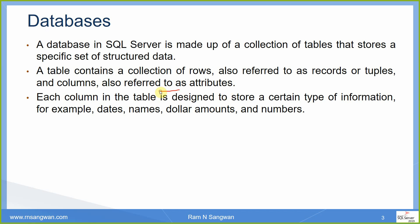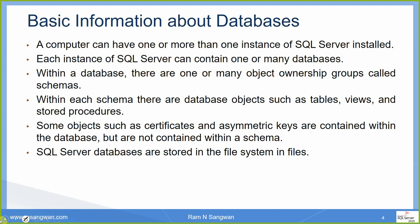A database in SQL Server is made up of a collection of tables that store a specific set of structured data. We also discussed unstructured data and file stream. A table contains a collection of rows, also referred to as records or tuples, and columns that are attributes. Each column is designed to store a certain type of information, like data types. In SQL Server, you can have one or more instances to organize your databases, and each instance can have one or more databases. Within a database, you can have a logical grouping of objects with ownership called schemas, and in each schema you can have database objects like tables, views, and stored procedures.